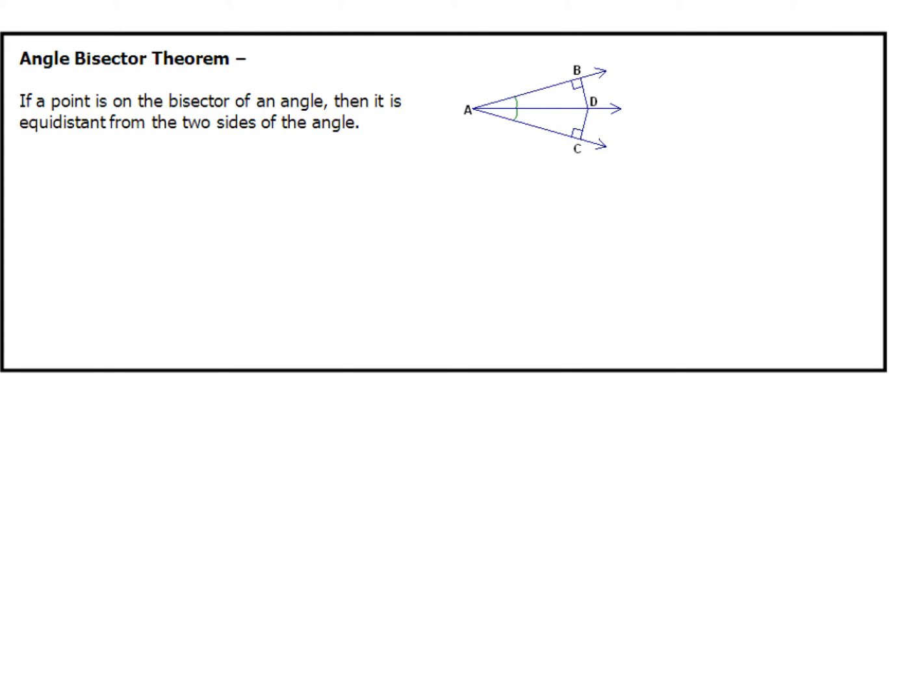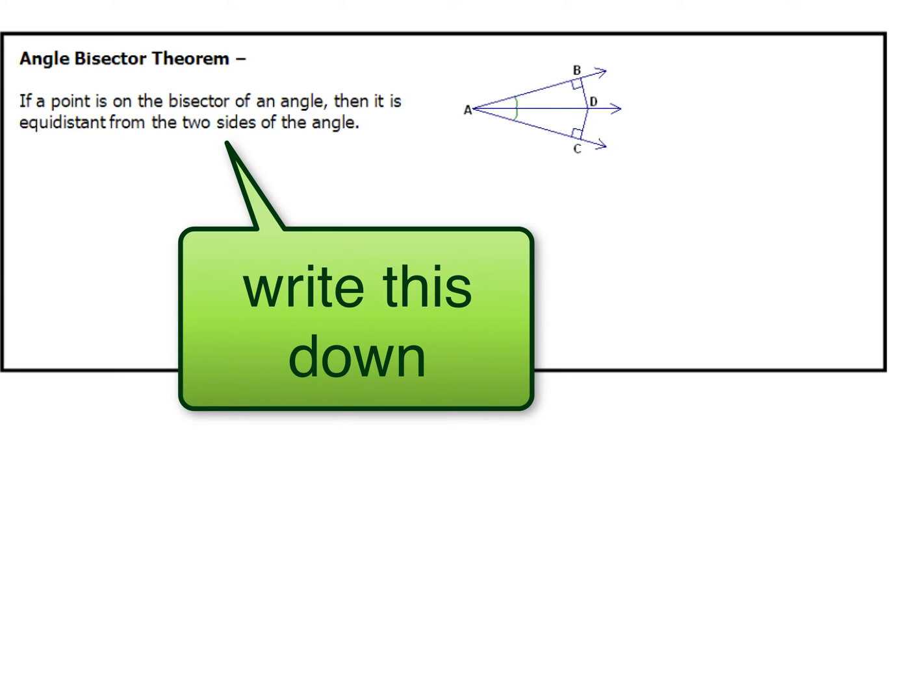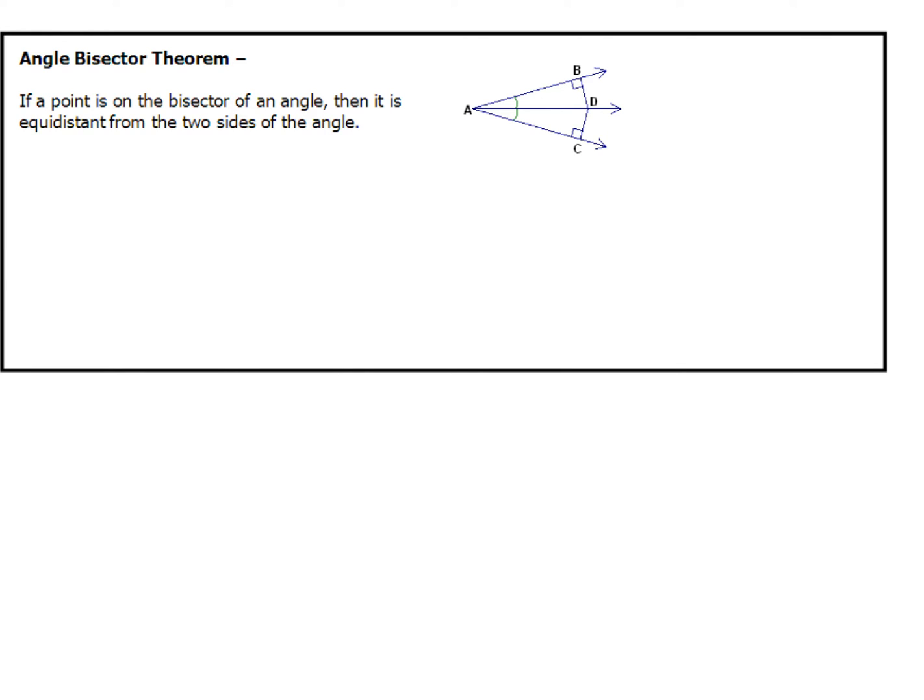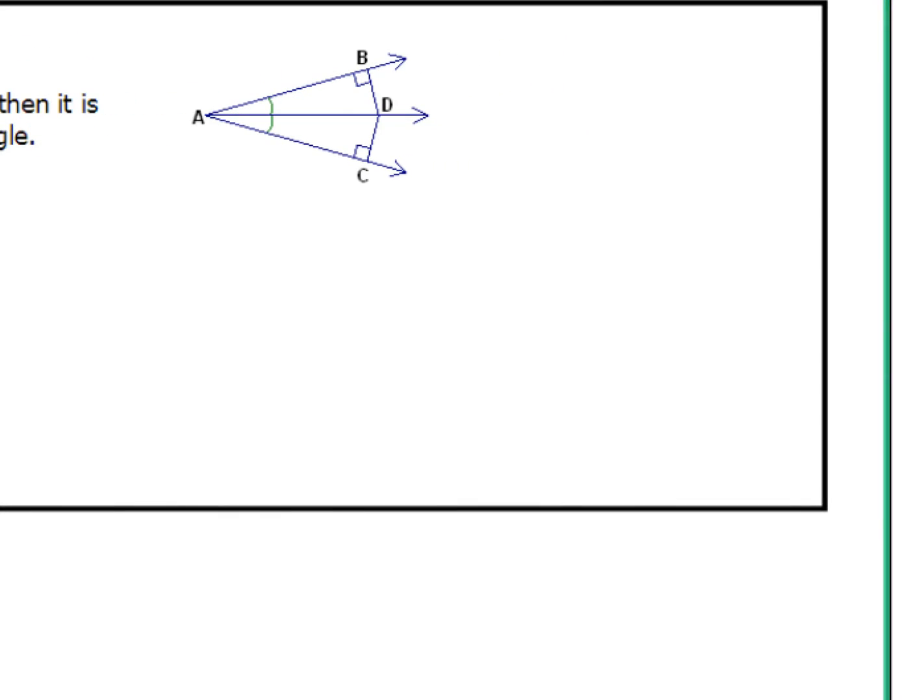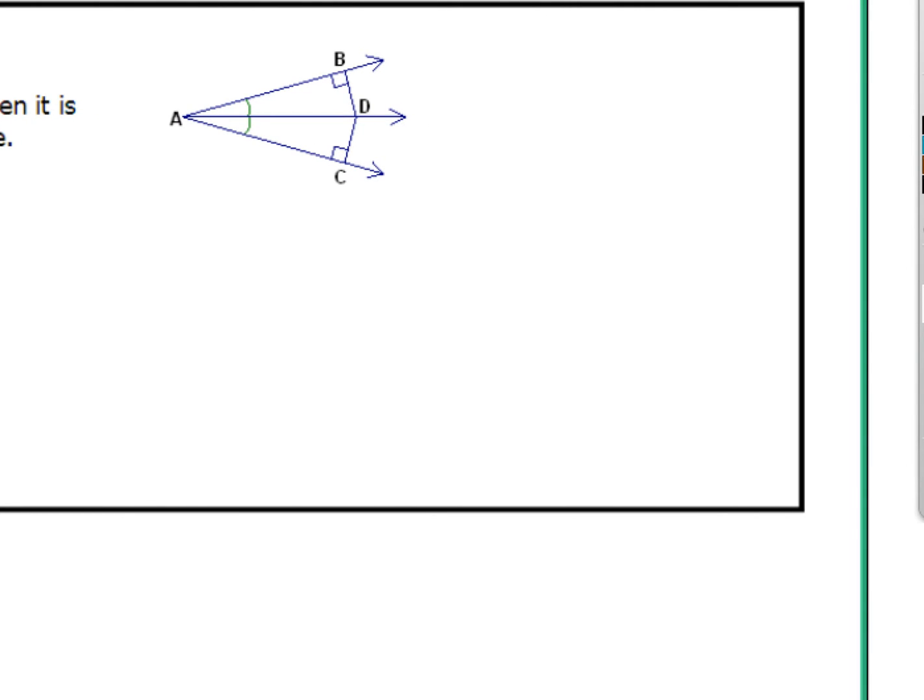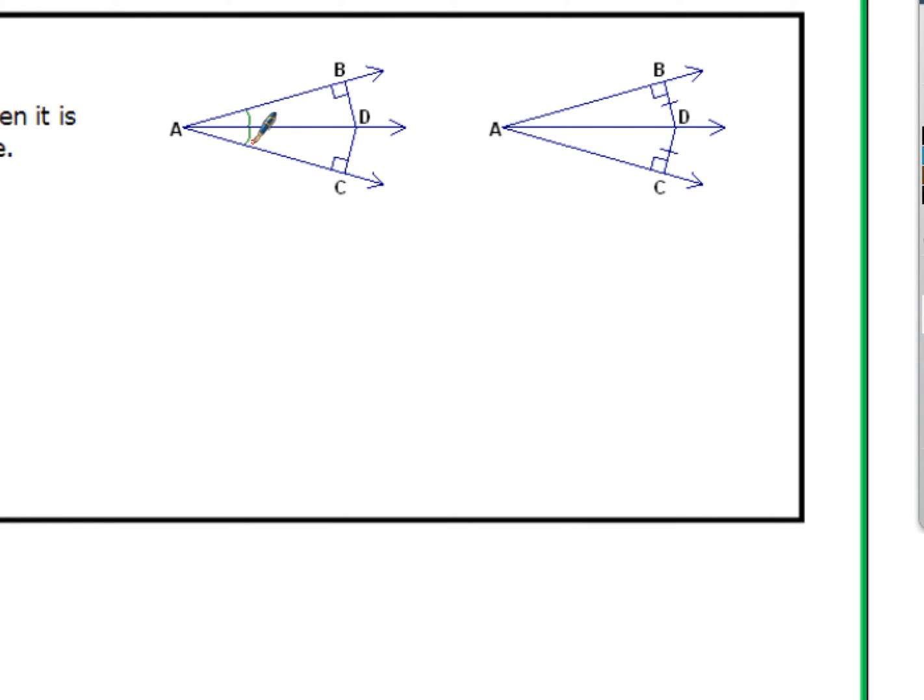Now the first thing we're going to do is take a look at the angle bisector theorem. The angle bisector theorem states if a point is on the bisector of an angle, then it is equidistant from the two sides. So if we have a picture that starts out like this, we're going to notice how this picture is going to be our conclusion. These two sides are going to be the same thing, and we can see that because of the way that it's marked in our diagram.